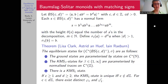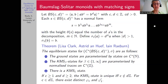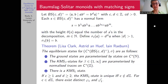A result of Lisa Clark, Astrid An Huef, and Iain Raeburn describes the equilibrium states for the Baumslag-Solitar monoid when C and D have matching signs. The ground states are parametrized by states on C*(N), determined by the generator B. KMS_β states above β = 1, including KMS_∞ states as weak-star limits, are parametrized by normalized traces on C*(Z). At the critical point β = 1, there is a KMS₁ state. For parameters C and D both at least 2, the KMS₁ state is unique precisely when D does not divide C; if C is a multiple of D, Clark and An Huef-Raeburn constructed at least two KMS₁ states.